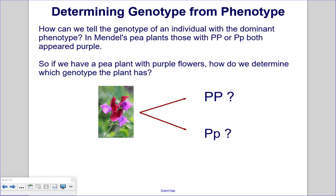In Mendel's pea plants, those with big P, big P, or big P, little p, both appeared purple. So if we have a pea plant with purple flowers, how do we determine which genotype the plant has — big P, big P, or big P, little p?